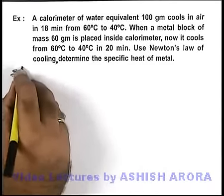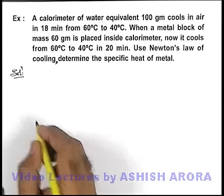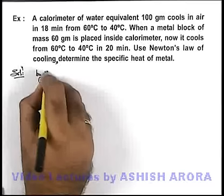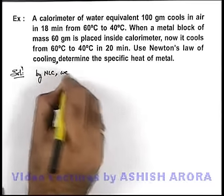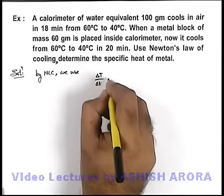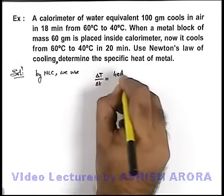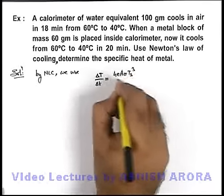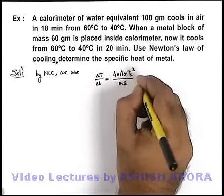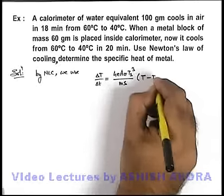Now we are required to use Newton's law of cooling and we need to determine the specific heat of metal. Just to simplify the analysis, we can use the average form of Newton's law of cooling. By Newton's law of cooling, delta T by delta t is equal to 4εAσT_s³ upon ms, multiplied by average temperature of body minus T_s.